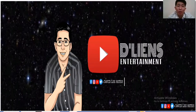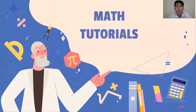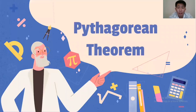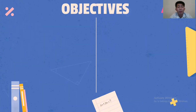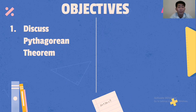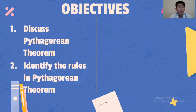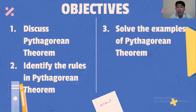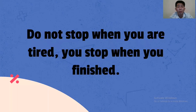Hello, mga alien! Welcome back to my YouTube channel. This is Sir DN, and welcome to the Aliens Vlog and Math Tutorials. For today, we're going to have another math tutorial and it's all about the Pythagorean theorem. The objectives of this lesson are: number one, discuss the Pythagorean theorem; number two, identify the rules in the Pythagorean theorem; and number three, solve examples. Always remember: do not stop when you are tired — you stop when you are finished.